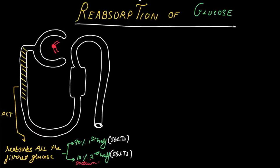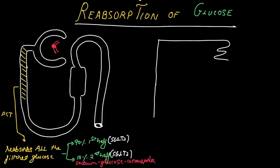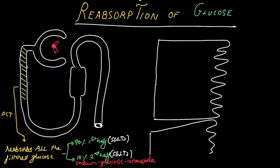The SGLTs are sodium-glucose co-transporters. They are carriers that mediate secondary active transport. I am drawing a tubule epithelial cell with a brush border, also called the convoluted border. This brush border has microvilli which greatly increase the surface area available for reabsorption.